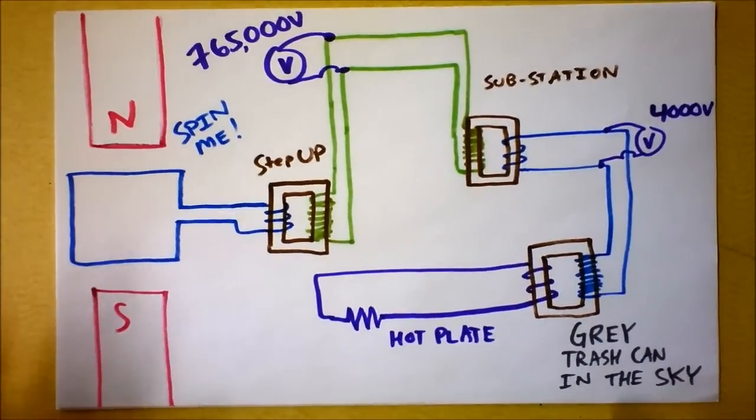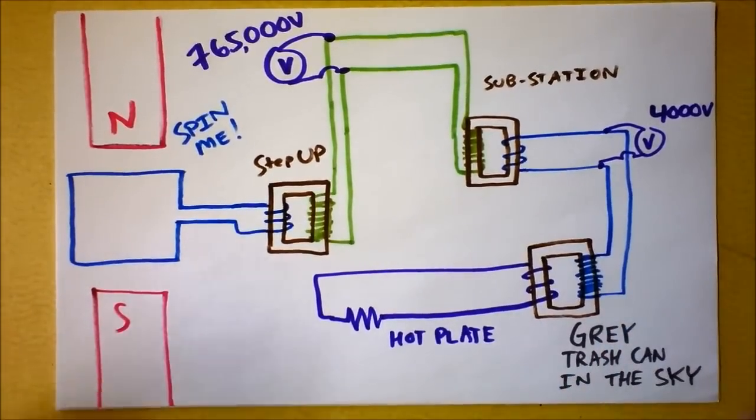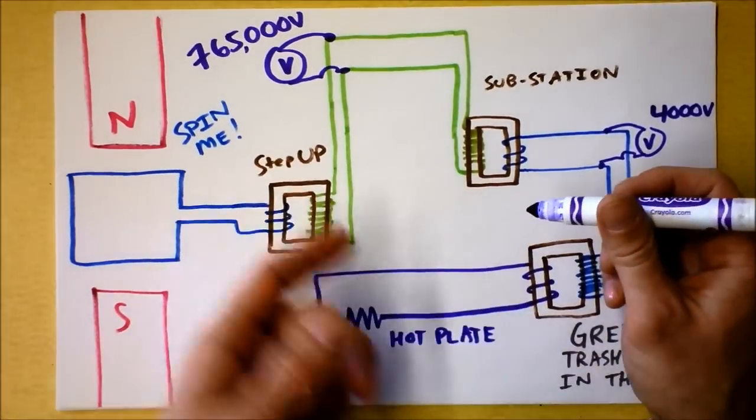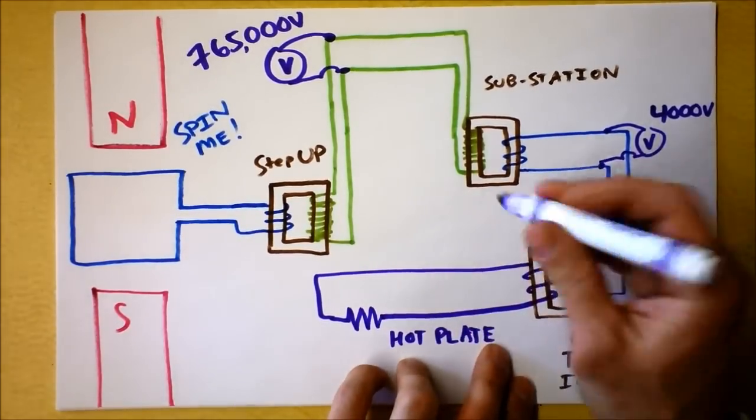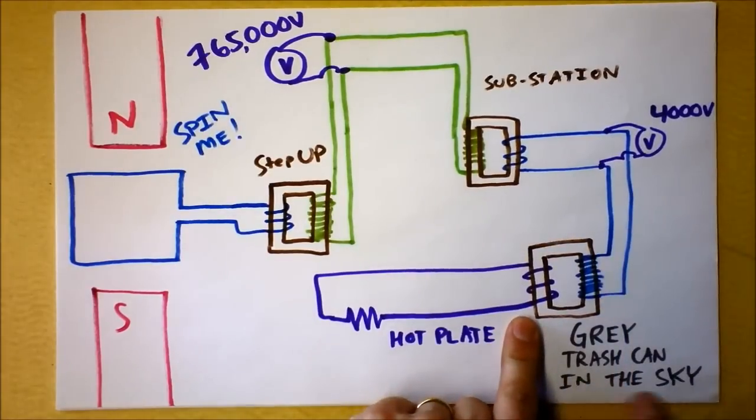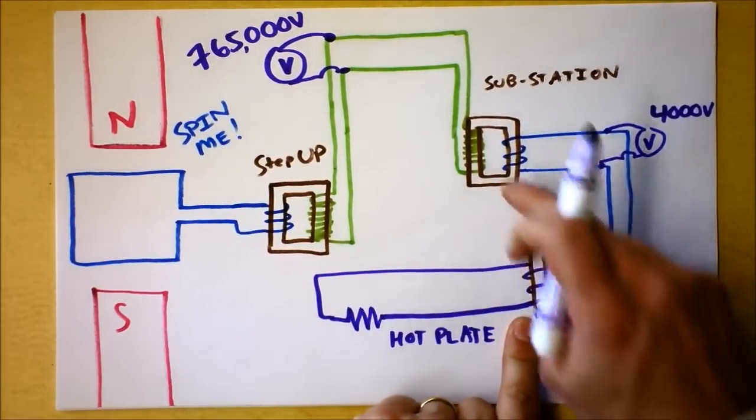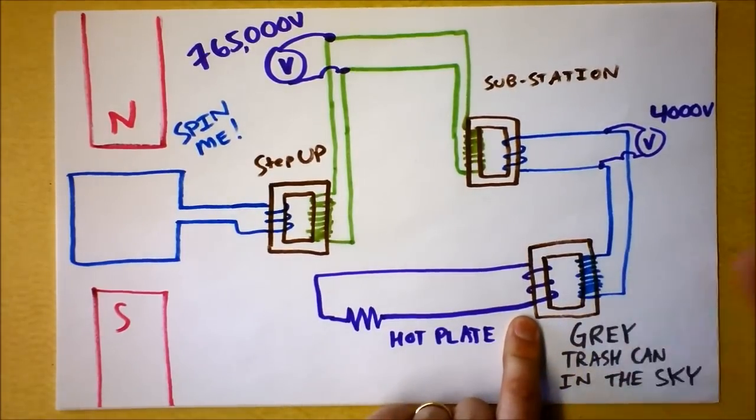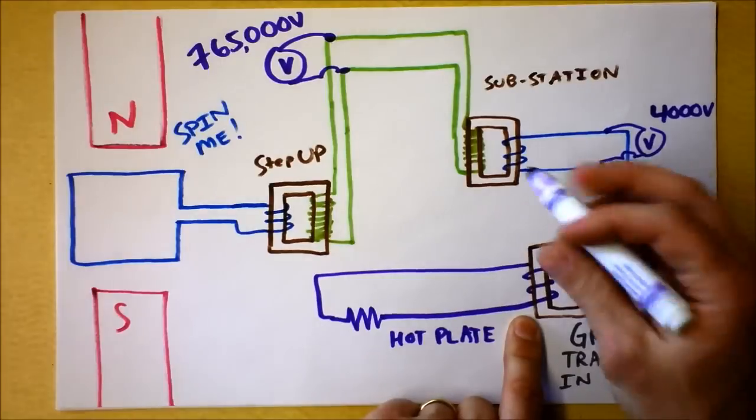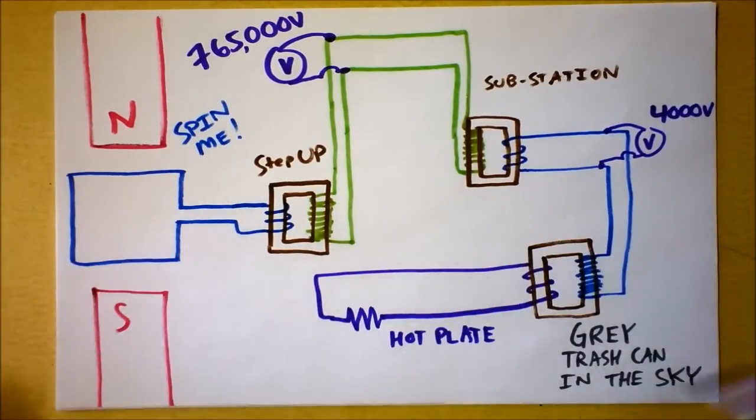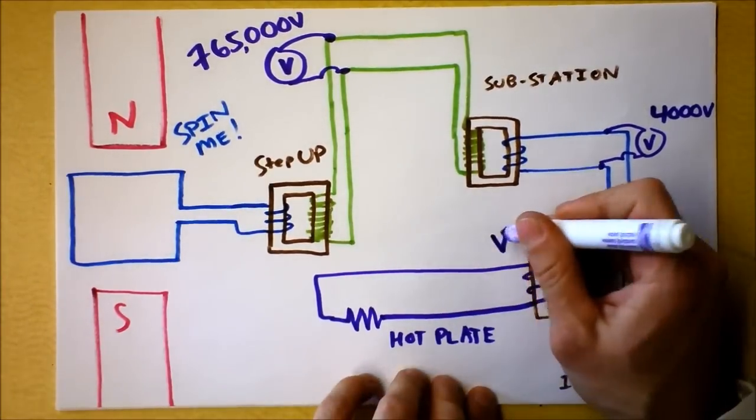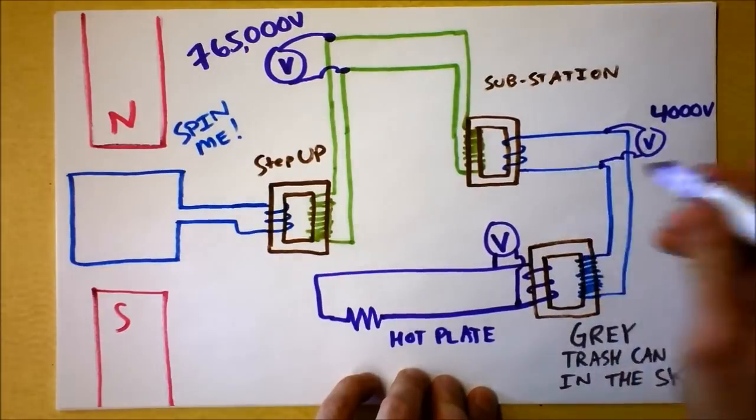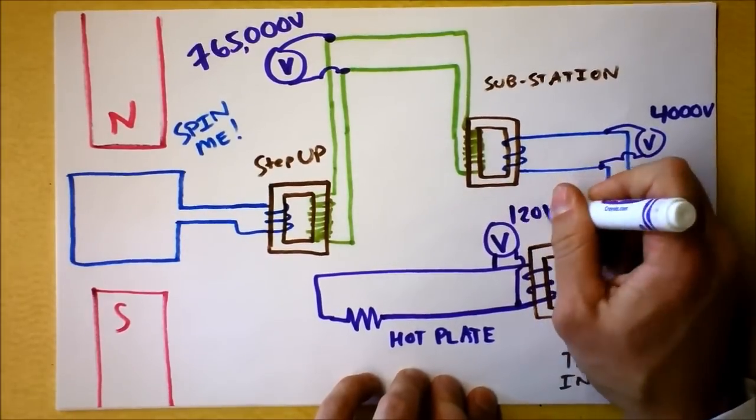And I know that I'm getting two different wires that are 240 volts apart from each other, but I'm only going to plug into one of the wires into the ground. Right at this gray trash can in the sky, after the substation, these trash cans are serving one to five houses depending on how your neighborhood sets it up. That voltage is now going to be 120 volts.